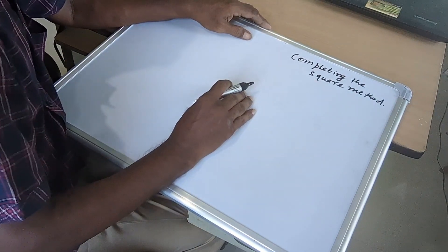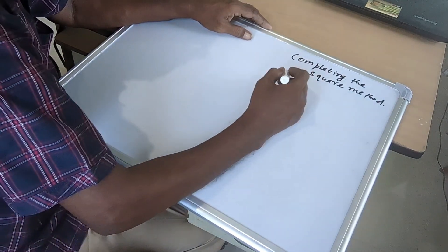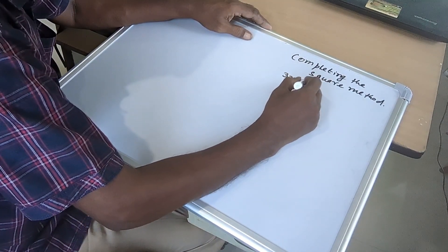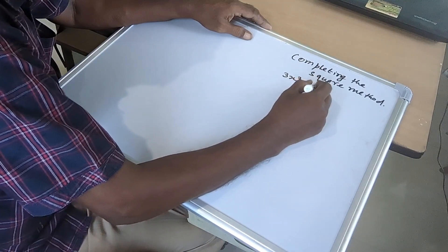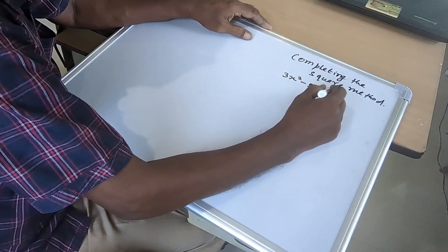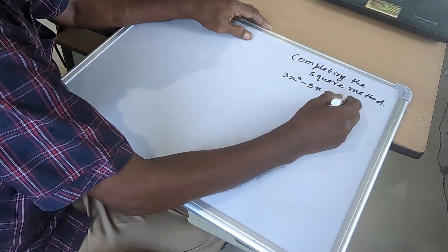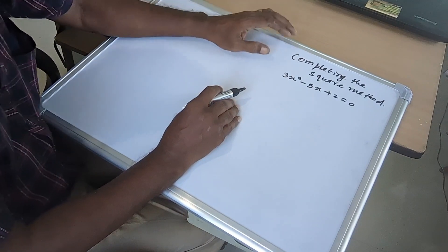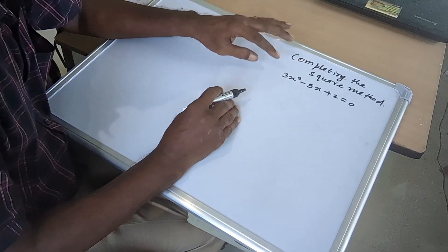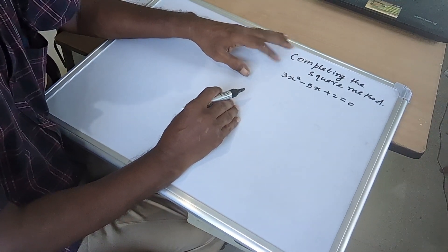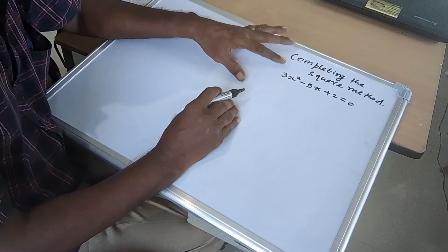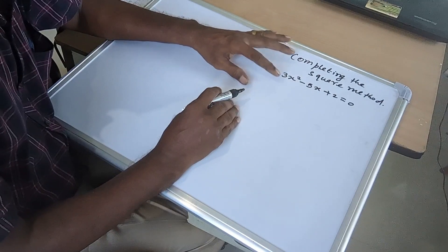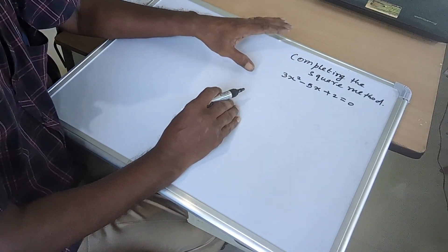Now we take a quadratic equation: 3x² minus 5x plus 2 equal to 0. This is the standard form of ax² plus bx plus c equal to 0. Here a is 3, b is minus 5, and c is 2.